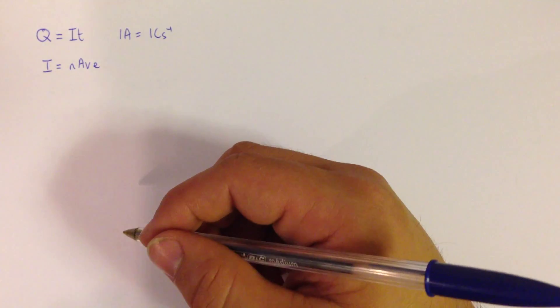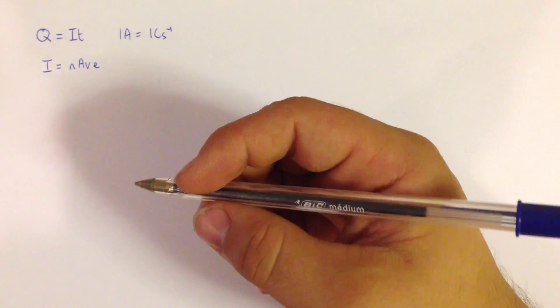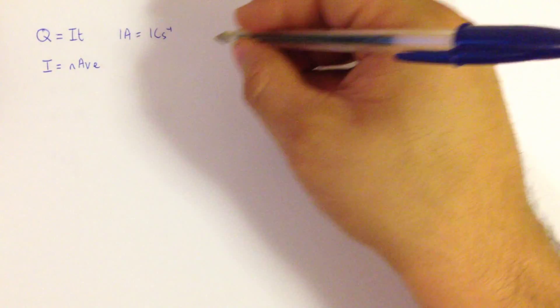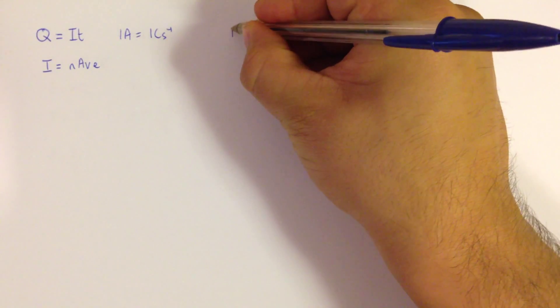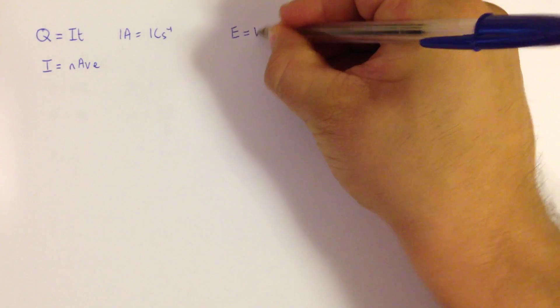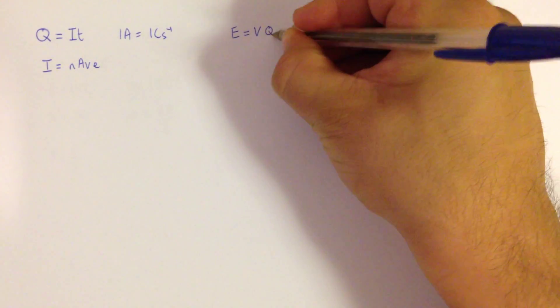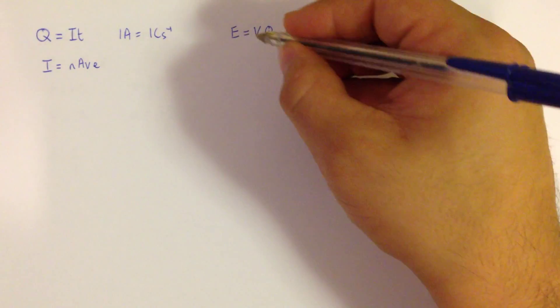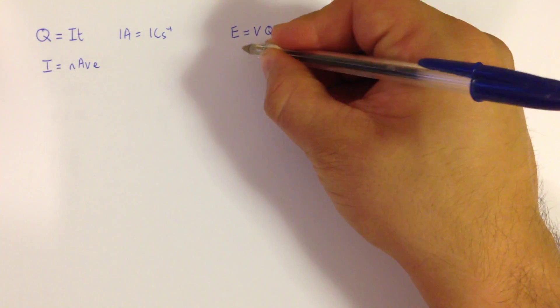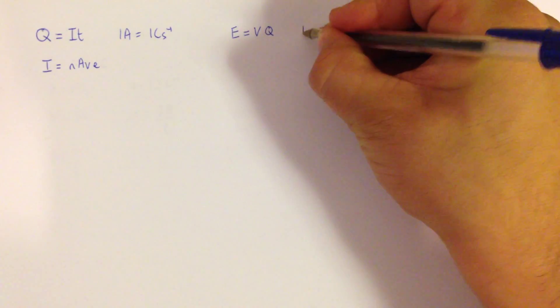The next equation comes from module 2. So module 2, the first equation that's going to appear a couple of times is the equation for energy or for work done, which is equal to voltage multiplied by the charge. Now this equation provides us with two things. Firstly, it provides us with an expression for 1 volt.